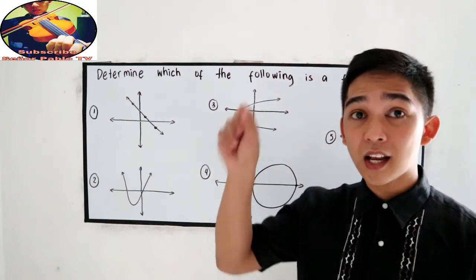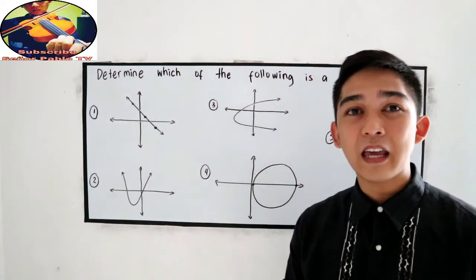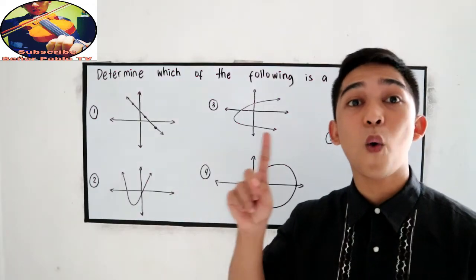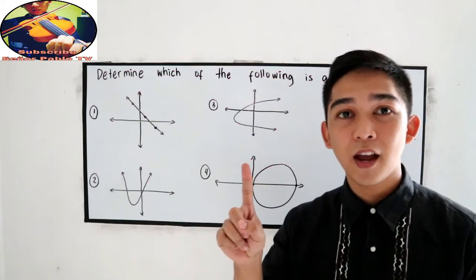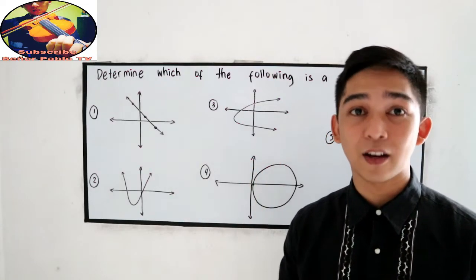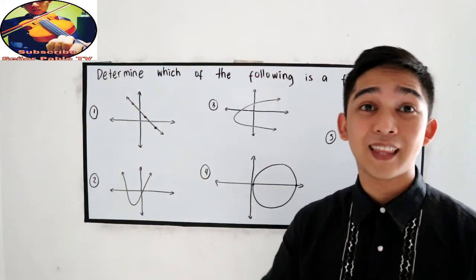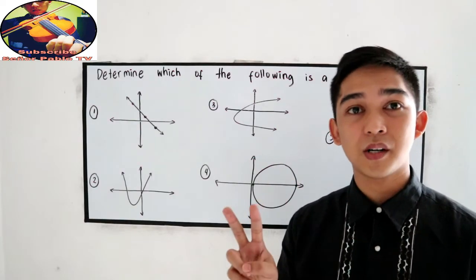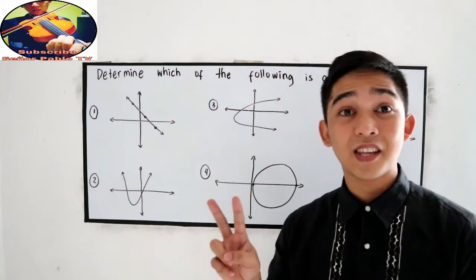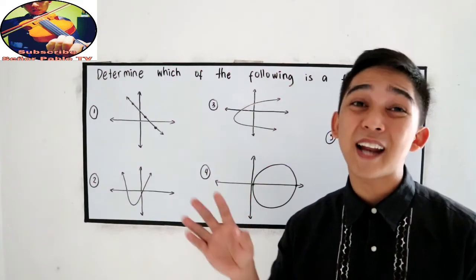We're going to draw a vertical line, and if the line touches only one point in our graph, then that is a function. That means if it touches two or more points in our graph, therefore that is not a function.